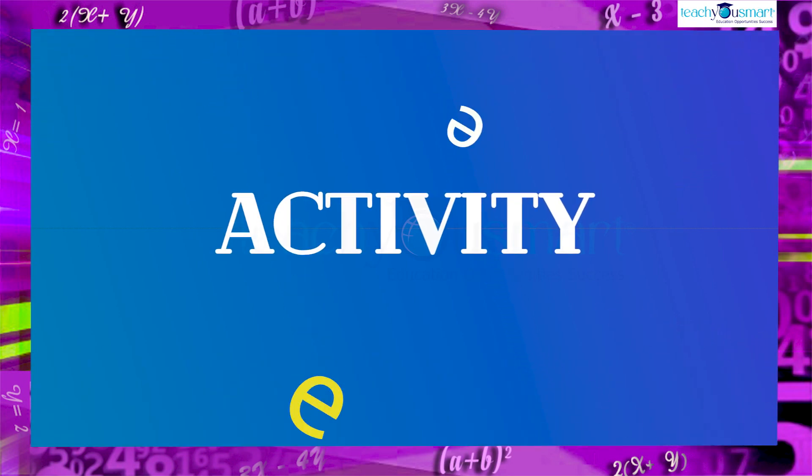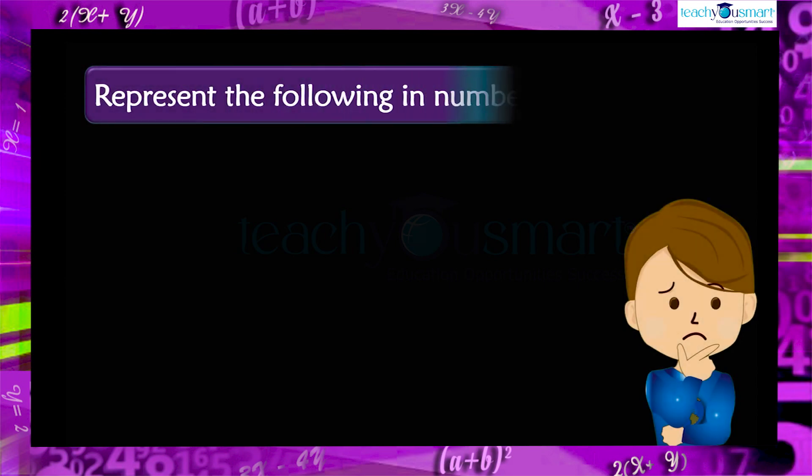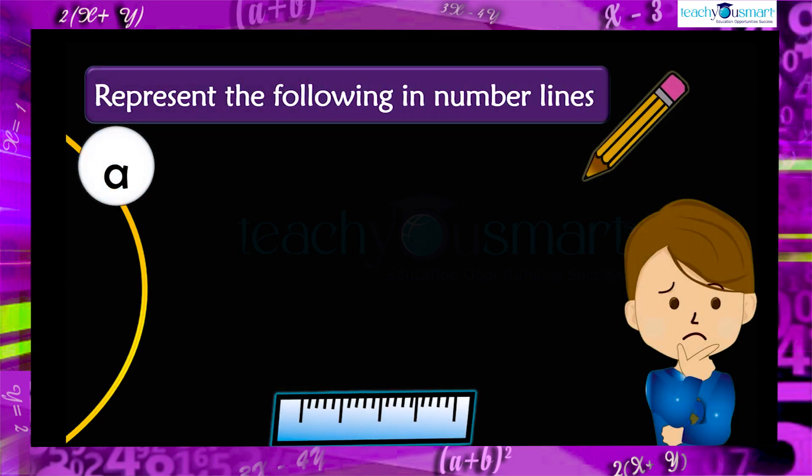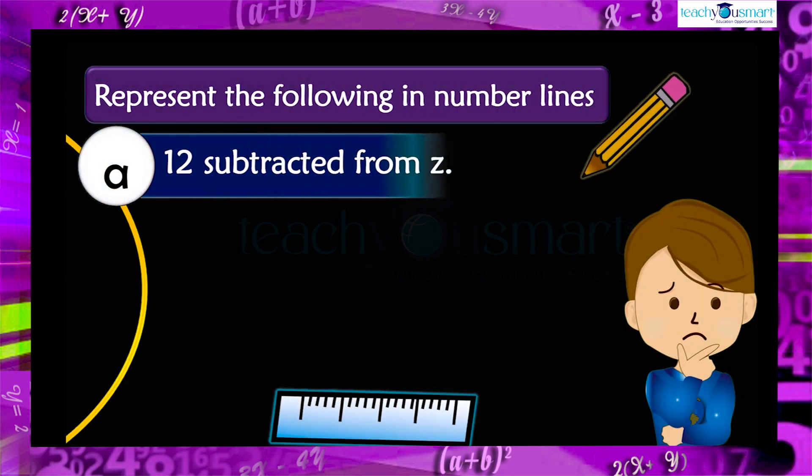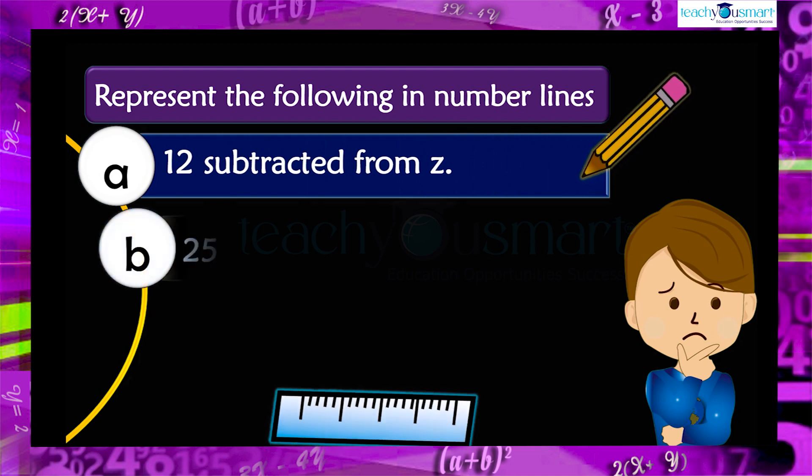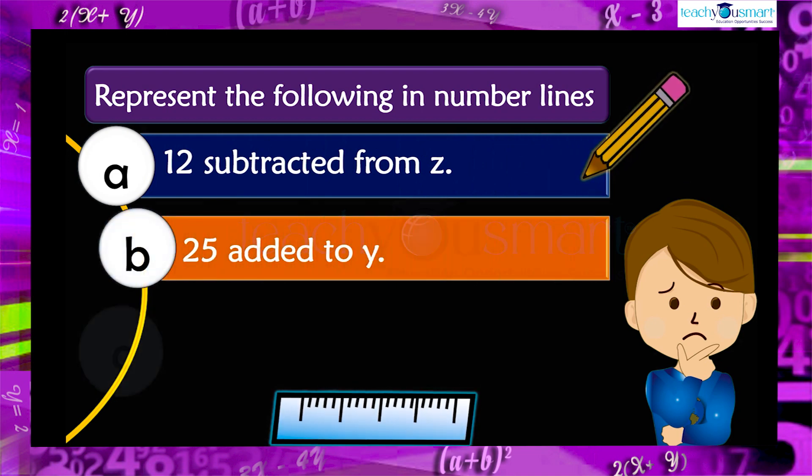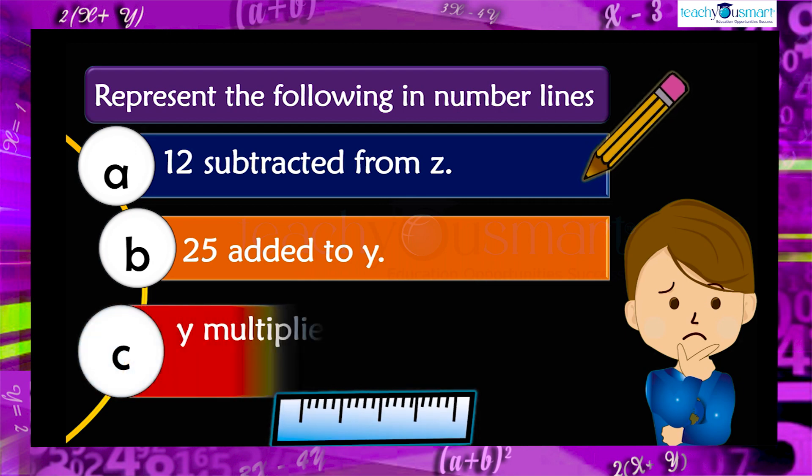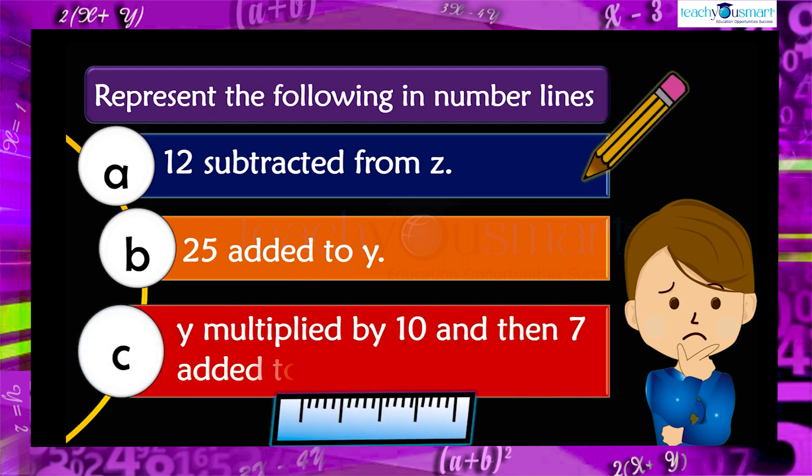Before winding up, let's check how much you understood by doing an activity. Represent the following in number lines: 12 subtracted from z, 25 added to y, y is multiplied by 10, and then 7 is added to a product.